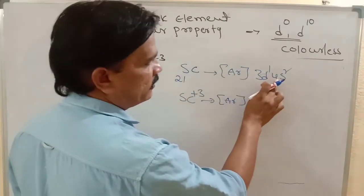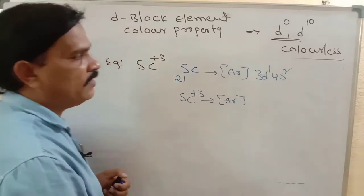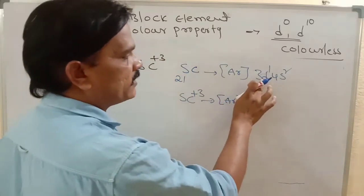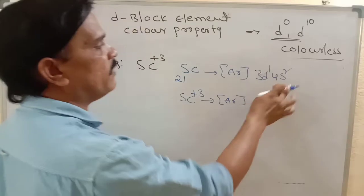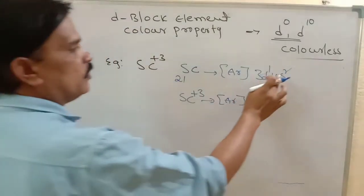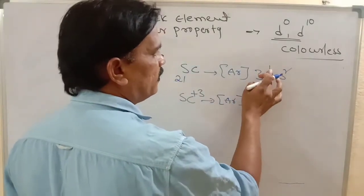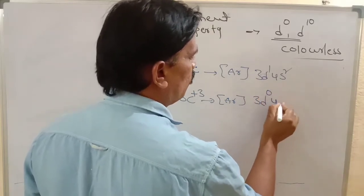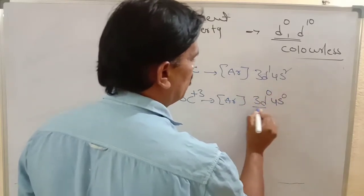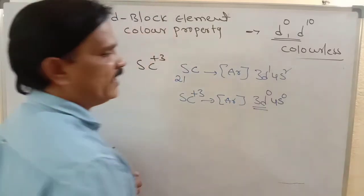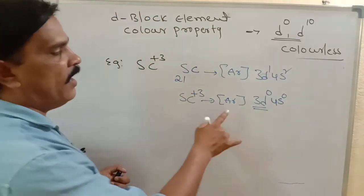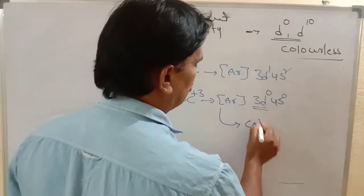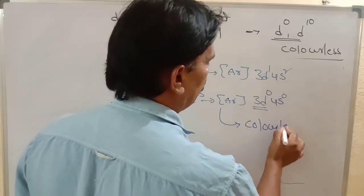We must remove from the 4S orbital first, then the 3D orbital, because nuclear attraction is more in the 3D orbital compared to 4S. So after removing two electrons from 4S and one from 3D, we get 3D-0 4S-0 — a D-0 configuration. Therefore, Sc³⁺ is colorless.